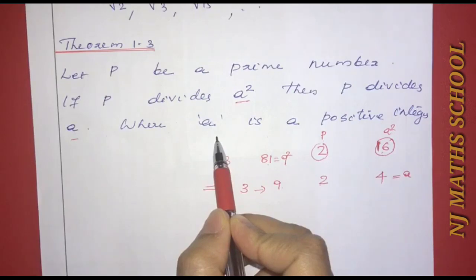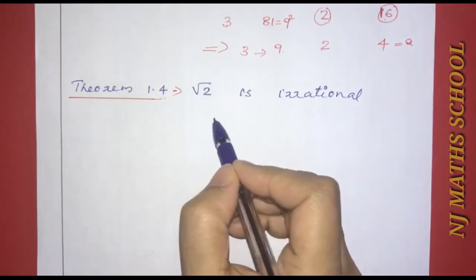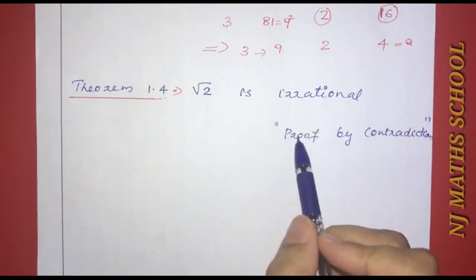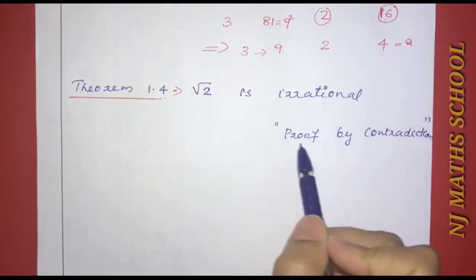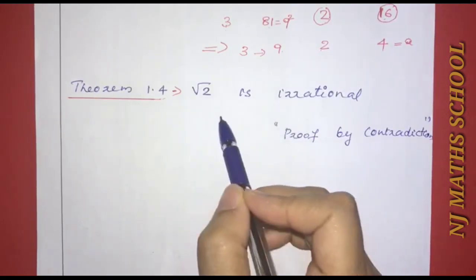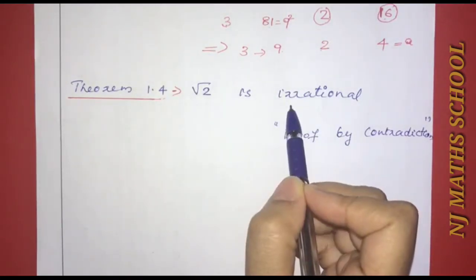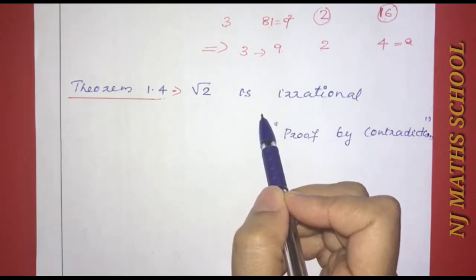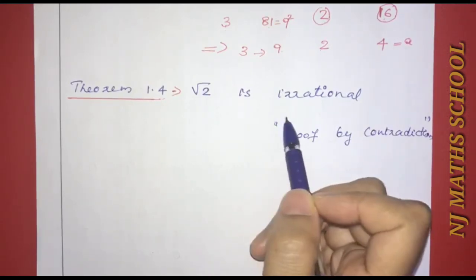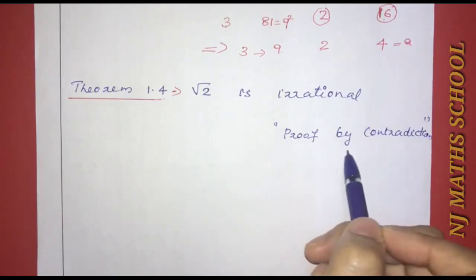Theorem 1.4: √2 is irrational. To prove this, we use proof by contradiction. We assume to the contrary that √2 is a rational number, and then proceed using the properties of rational numbers to derive a contradiction.